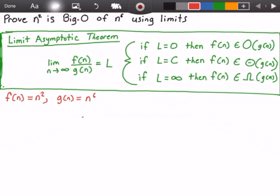Let's go ahead and use our theorem. So we have the limit as n approaches infinity of f of n divided by g of n.